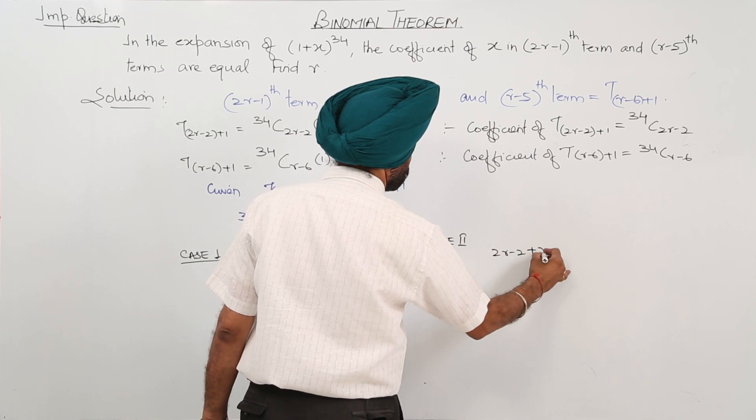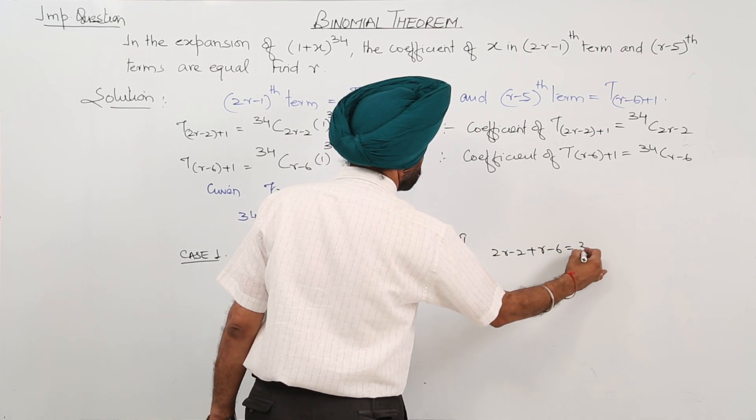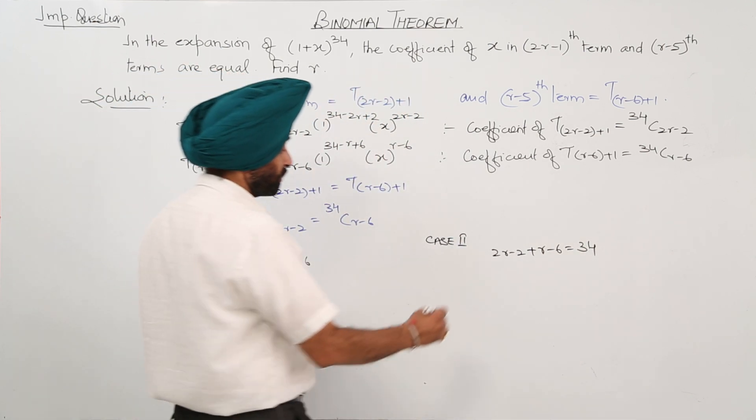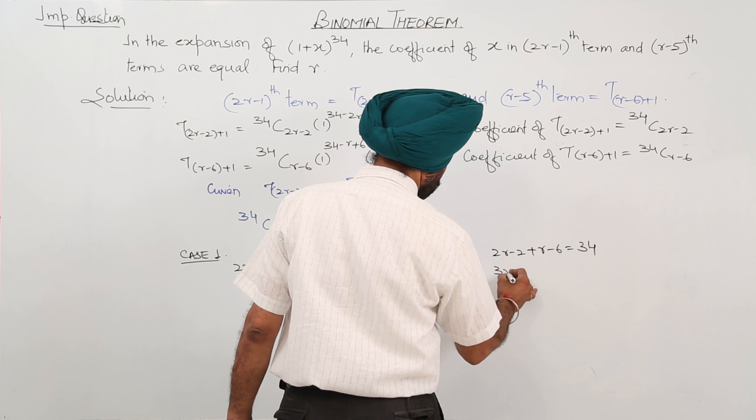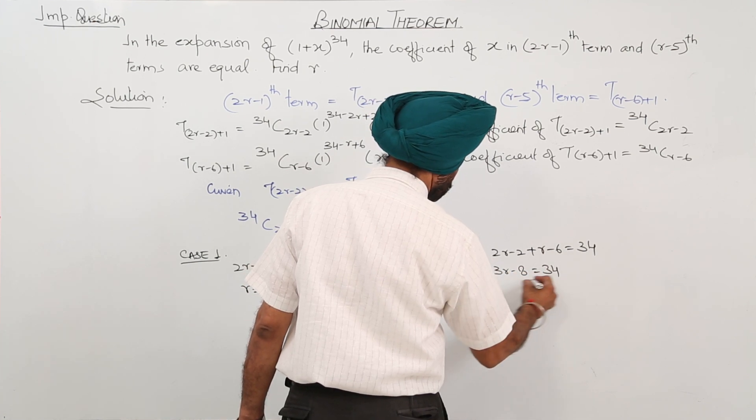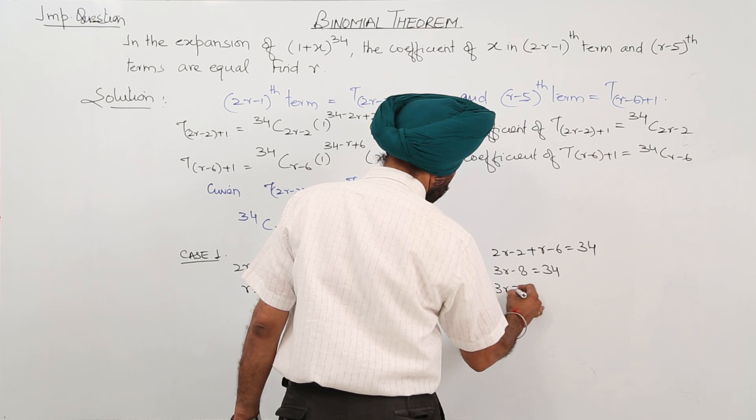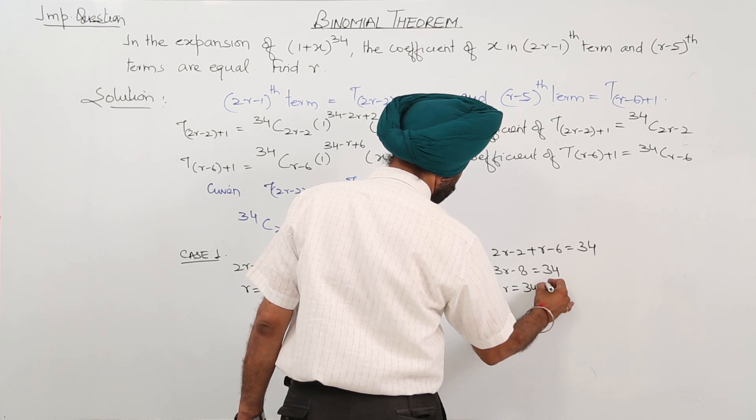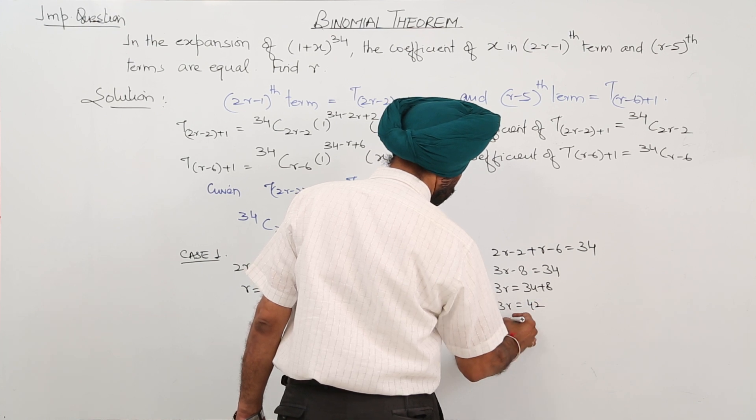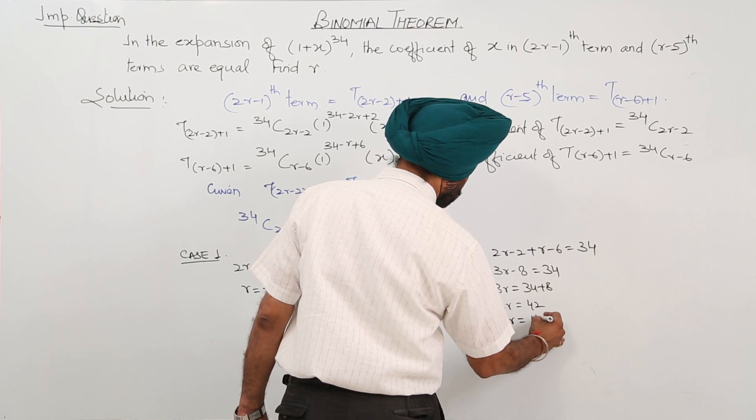Case 2: (2r-2) + (r-6) equals 34. So 3r-8 equals 34, therefore 3r equals 42, and r equals 14.